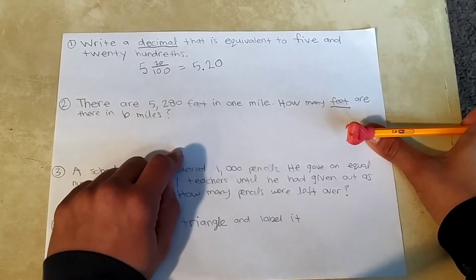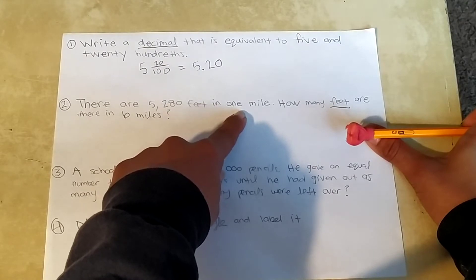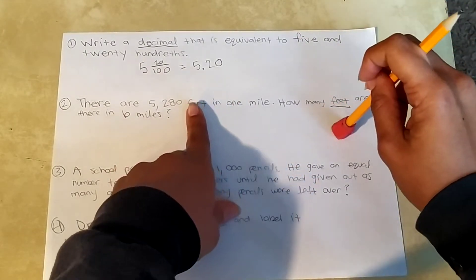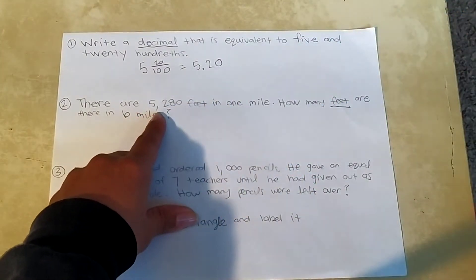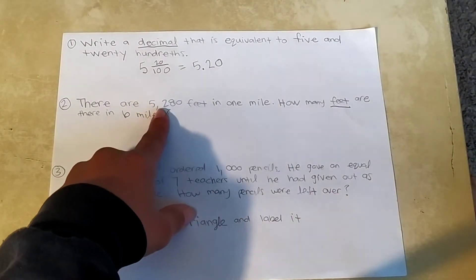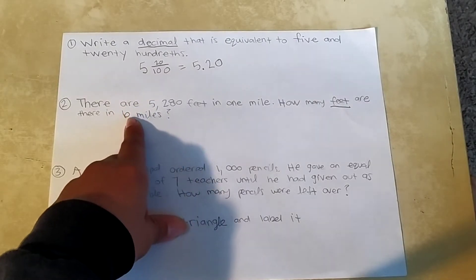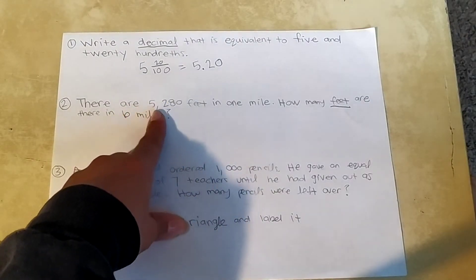So we can give an estimate. If 5,000 feet are in one mile, if I need to get all the way up to six, I hypothesize that it will be close to or more than 30,000 feet because six times five is 30. So let's see what we get.